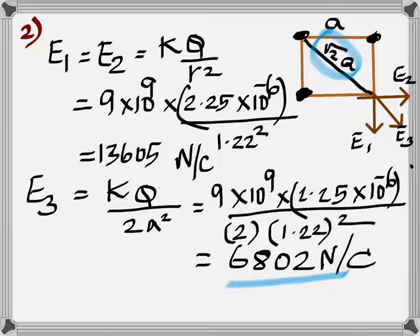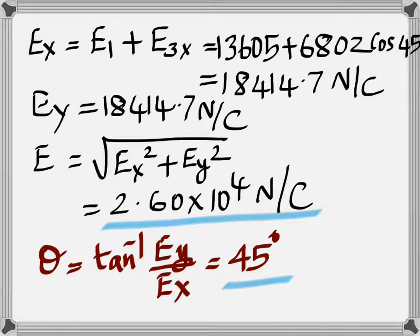But E3 has to be resolved into the vertical and the horizontal components, which is what I've done here. And then you have the total horizontal component EX as E1 plus the X component of E3. And surely EX and EY will be the same. It's a symmetrical type of situation.